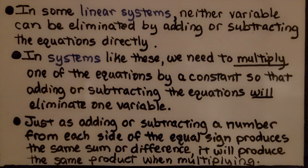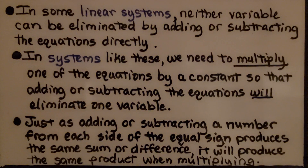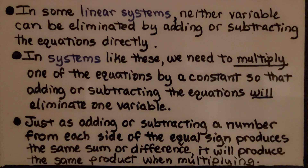In some linear systems, neither variable can be eliminated by adding or subtracting the equations directly. In systems like these, we need to multiply one of the equations by a constant so that adding or subtracting the equations will eliminate one variable. Just as adding or subtracting a number from each side of the equal sign produces the same sum or difference, it will produce the same product when multiplying.